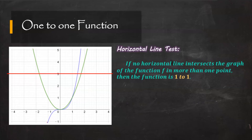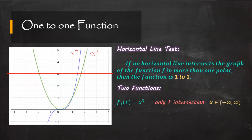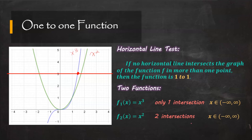Here I have two functions: x² (green) and x³ (blue). For x³, there is only one intersection with the horizontal line, given the domain negative infinity to infinity. For x², there are two intersections with the horizontal line given the same domain — one here and one on the negative side. So we can conclude that x³ is one-to-one, while x² is not a one-to-one function.